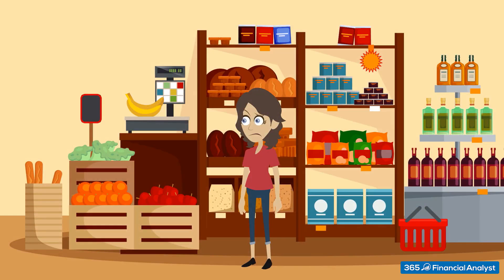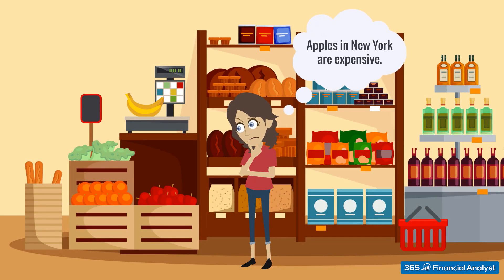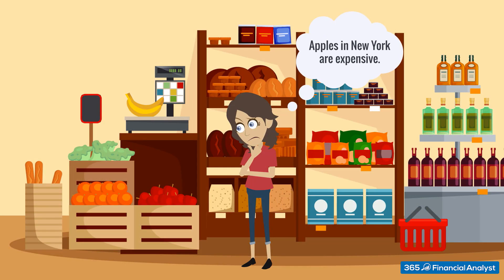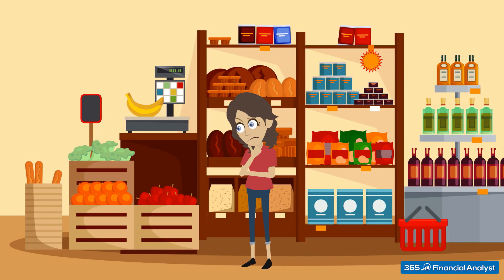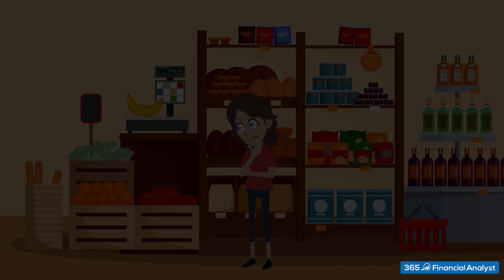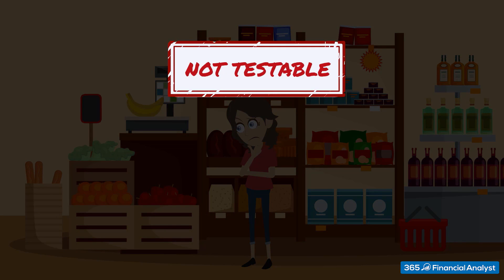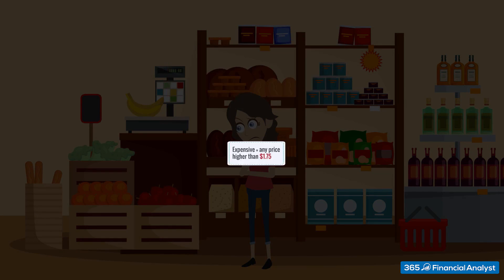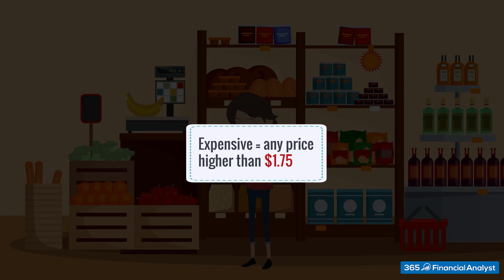If I tell you that apples in New York are expensive, this is an idea, or a statement, which, however, is not testable until I have something to compare it with. If I define expensive as any price higher than $1.75 per pound, then it immediately becomes a hypothesis.